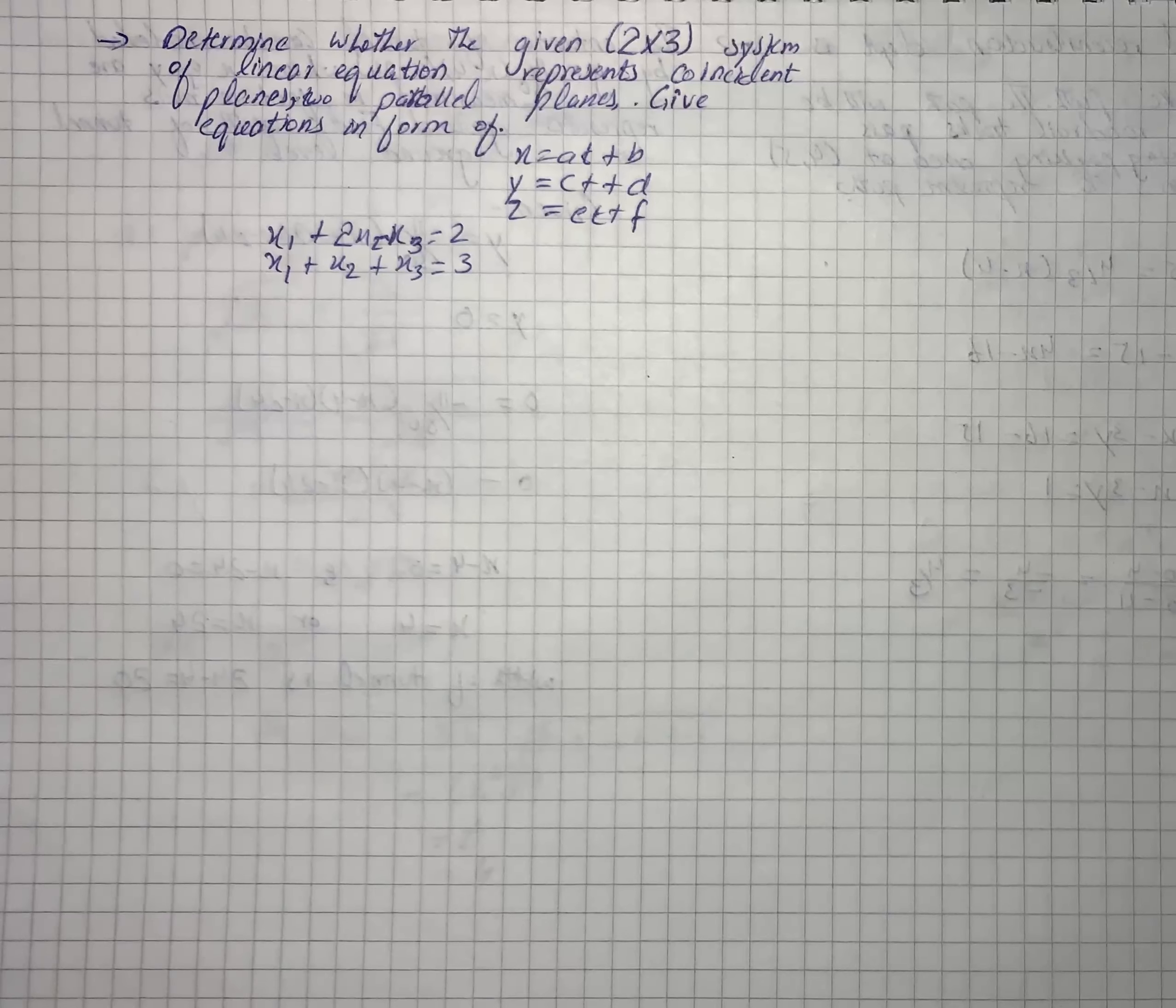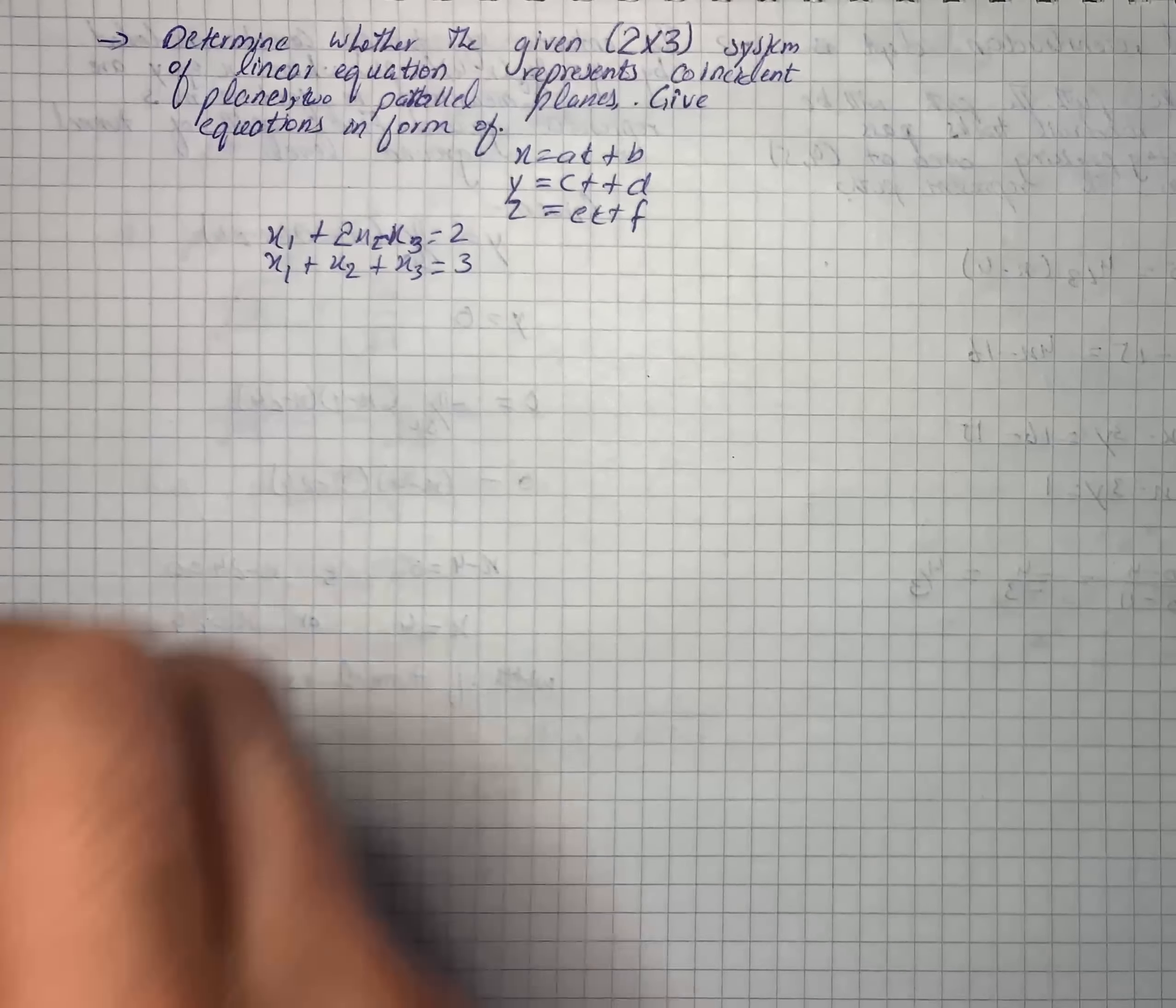In the latter case, given the parametric equations for the line, that is given equation x = at + p, y = ct + t, z = et + f, where x₁ + 2x₂ - x₃ = 2 and x₁ + x₂ + x₃ = 3.